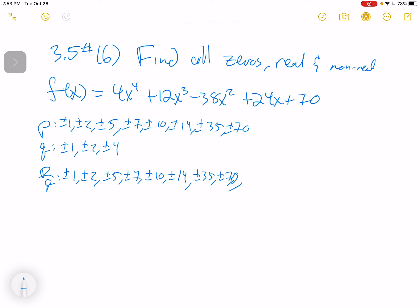70. Plus or minus 1 half, plus or minus 1 fourth, plus or minus 5 halves, plus or minus 5 fourths, plus or minus 7 halves, plus or minus 7 fourths, plus or minus 35 halves, plus or minus 35 fourths. I believe that covers everything.